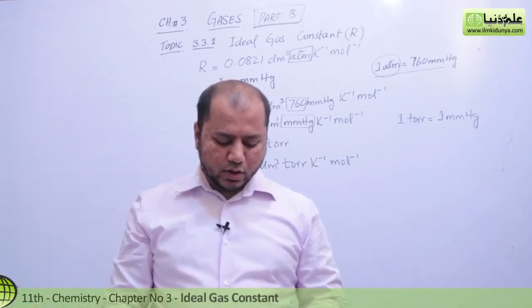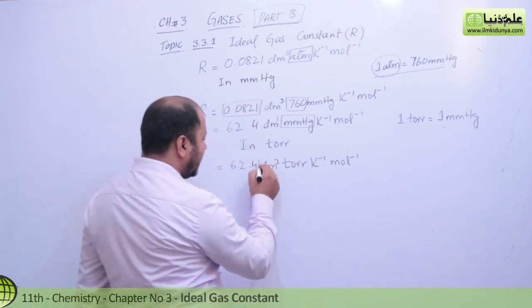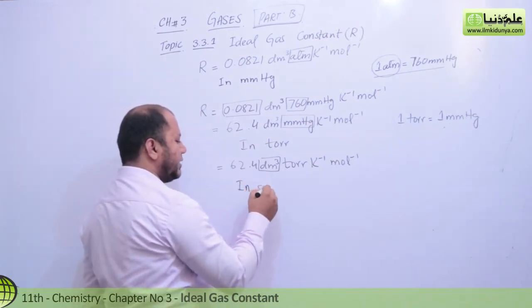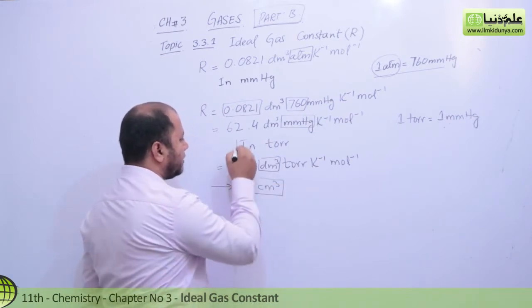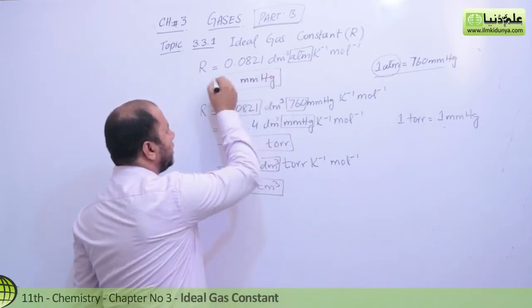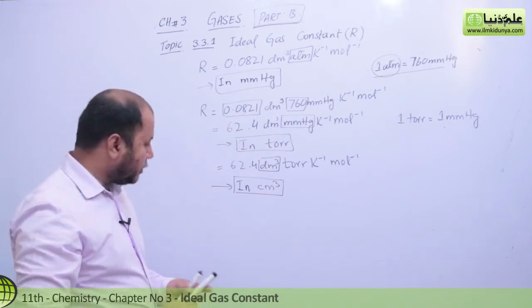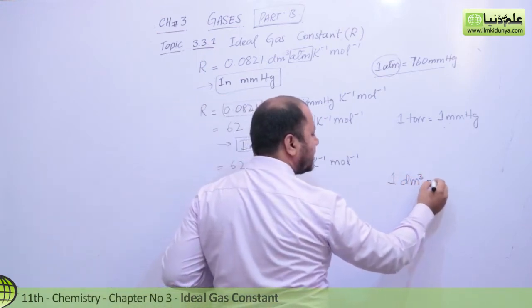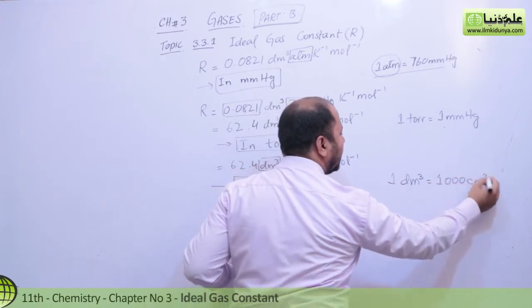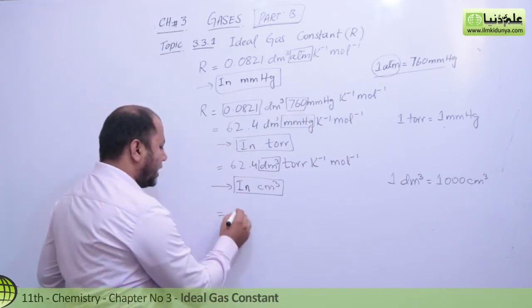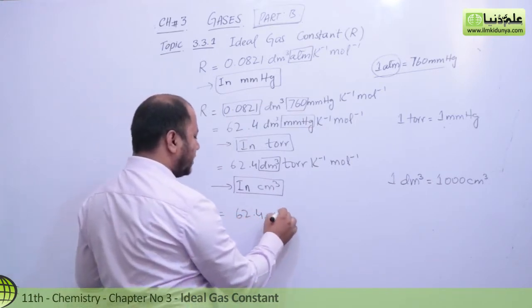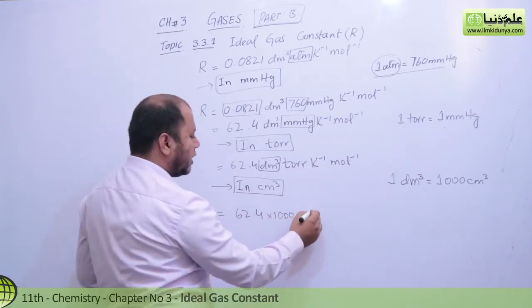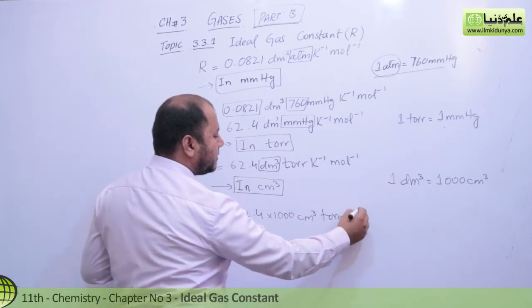Now you might think: let's convert dm³ into cm³. Students, 1 dm³ equals 1000 cm³ — this is something you must remember. So in place of 62.4 dm³, you write 1000, because 1 dm³ equals 1000 cm³. I am placing the cm³ value, which comes to one thousand, and you can write Torr per kelvin per mole.